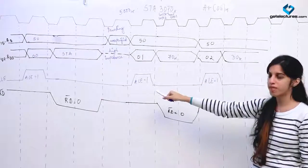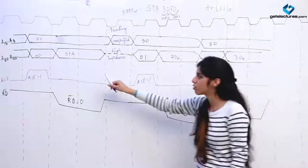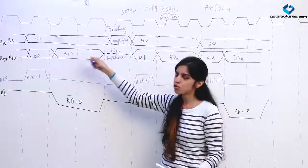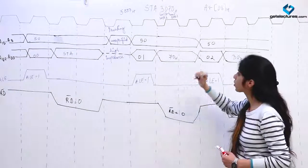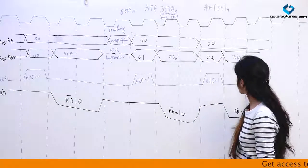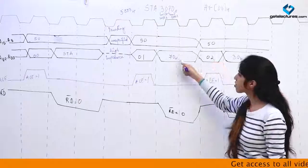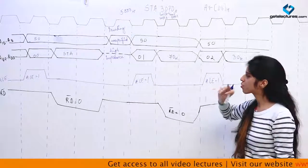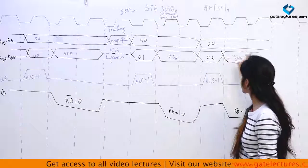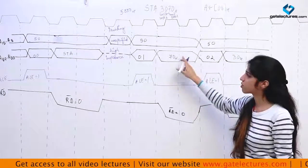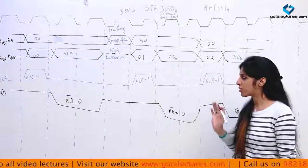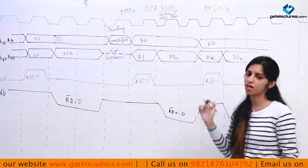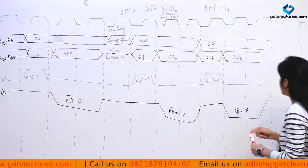Now see what the microprocessor has: it knows the instruction — that is, the contents of the accumulator are to be stored in some memory location — and we have got the memory location, which is 3070. Now what do we do? The PC is going to be overwritten with this memory location: 3070 is going to be written to the PC. We reach that location and write the contents of the accumulator there.